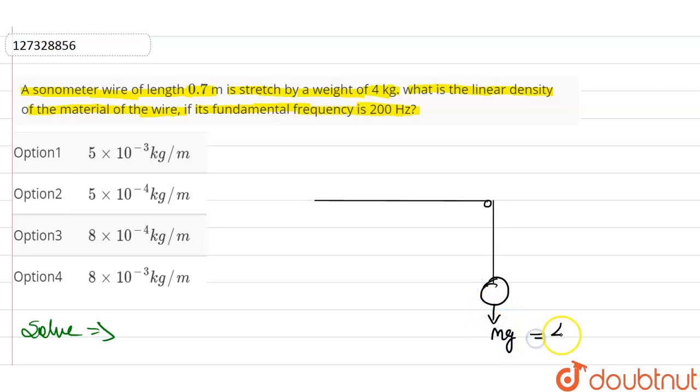mg is equal to 4 kg given and this is a sonometer wire which has length L. We have given here 0.7 meter length after the stretch of it. So the fundamental frequency we have F is the value of 200 Hz given. Now we are saying that its linear density mu to find.